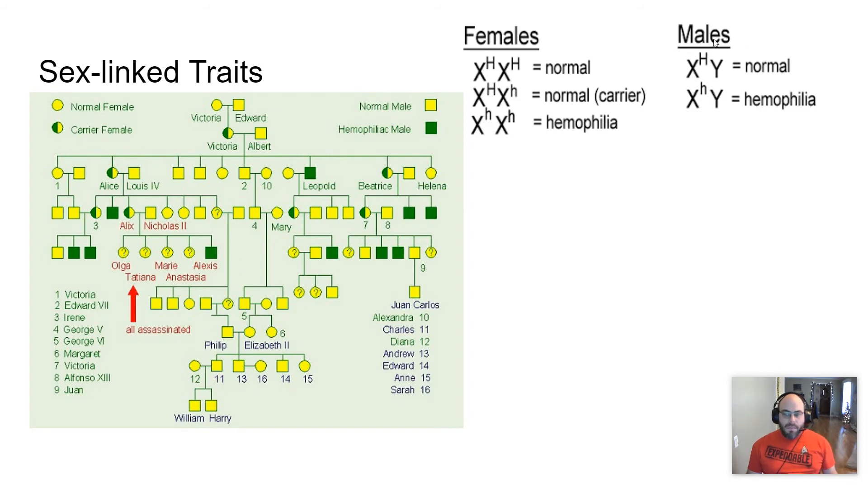A male only needs one little h because that Y doesn't carry the gene on it. And so there's only one opportunity for the male to be quote unquote normal and have that dominant allele. And so males don't have a homozygous or heterozygous because they only have one allele of that gene. And so males are much more likely to have a sex linked recessive trait than females are. Colorblindness is another example of this.